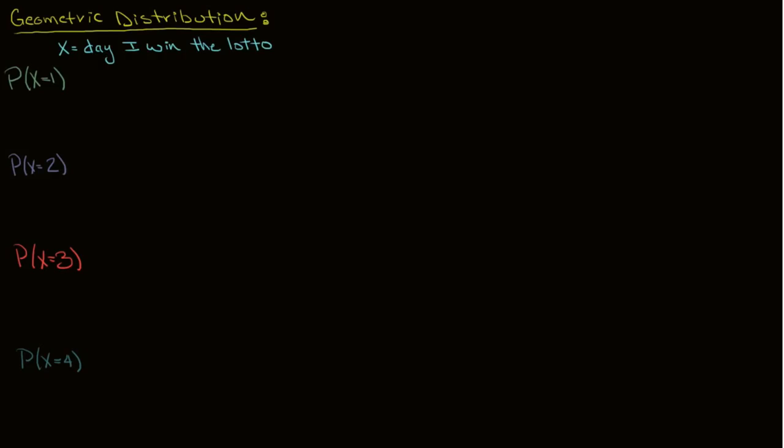Sal hired me because I'm good at math, so I find the best lotto in town, and it has a 1/100th chance of winning the lotto. That means the probability that I win on day one is 1 over 100. I kind of beat all the odds and I win the lottery. Now let's look at the probability that x equals 2.